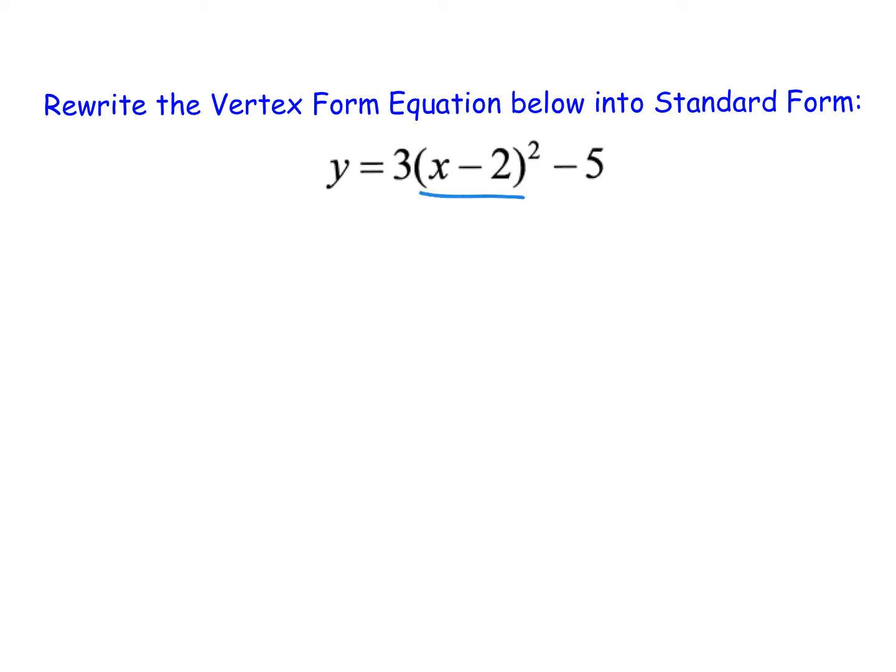The big difference is that we have this parentheses squared. This parentheses squared really complicates things because standard form doesn't have any parentheses. Vertex form does. So we need to rewrite this form without parentheses if we want to turn it into standard form.